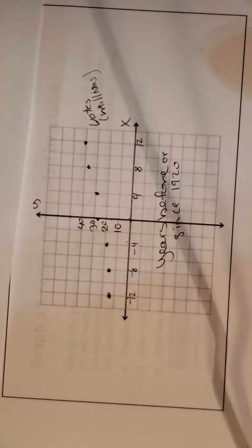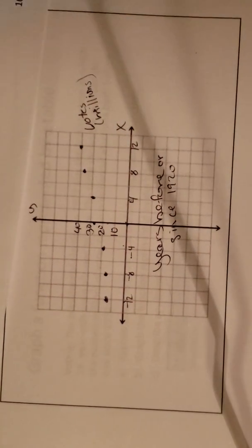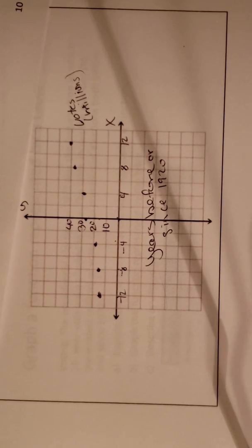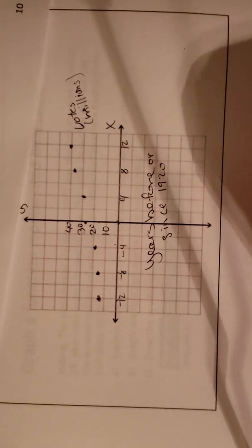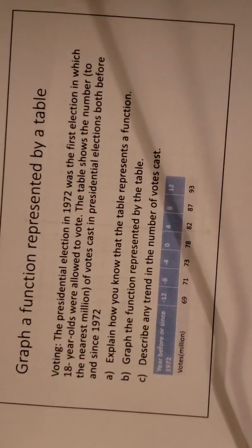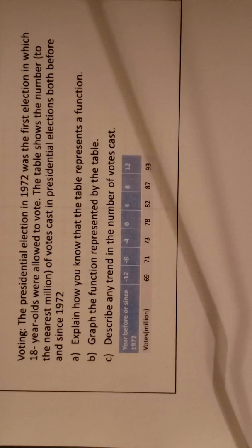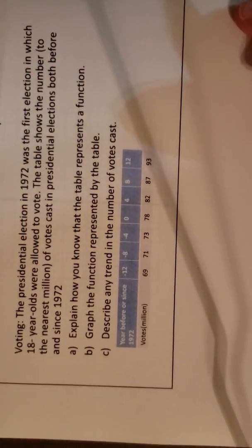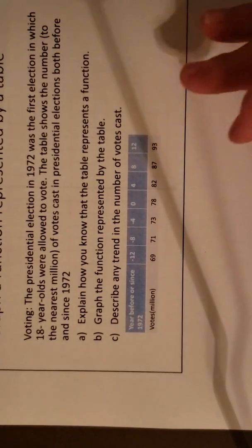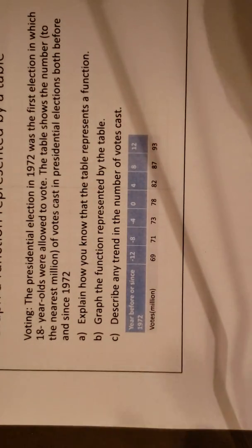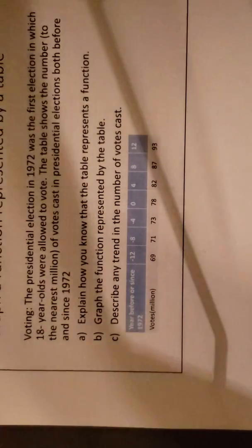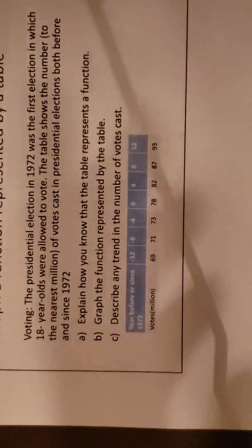So the next one you will stop and do on your own and ask the sub so you can check it. It is dealing with the 18-year-olds when they were allowed to vote in 1972. All right, same process: how do I know the table is a function, graph it, describe the trend.